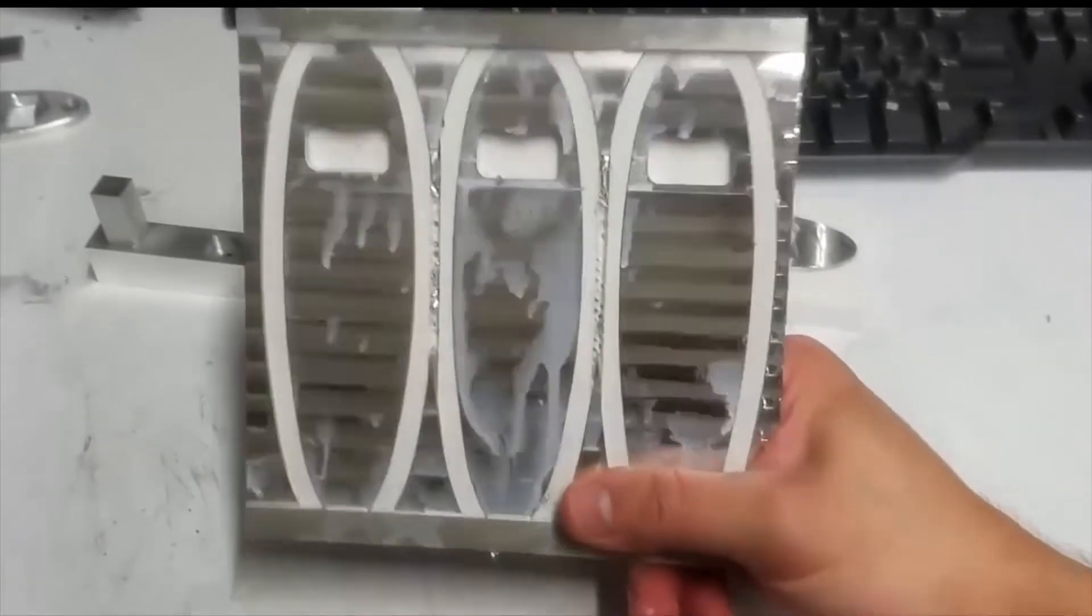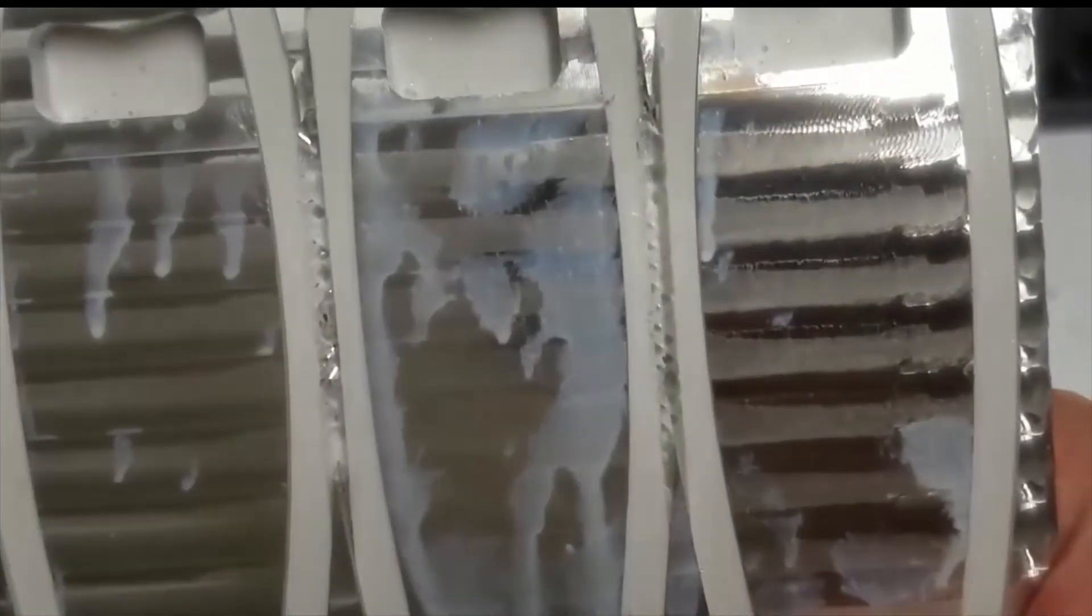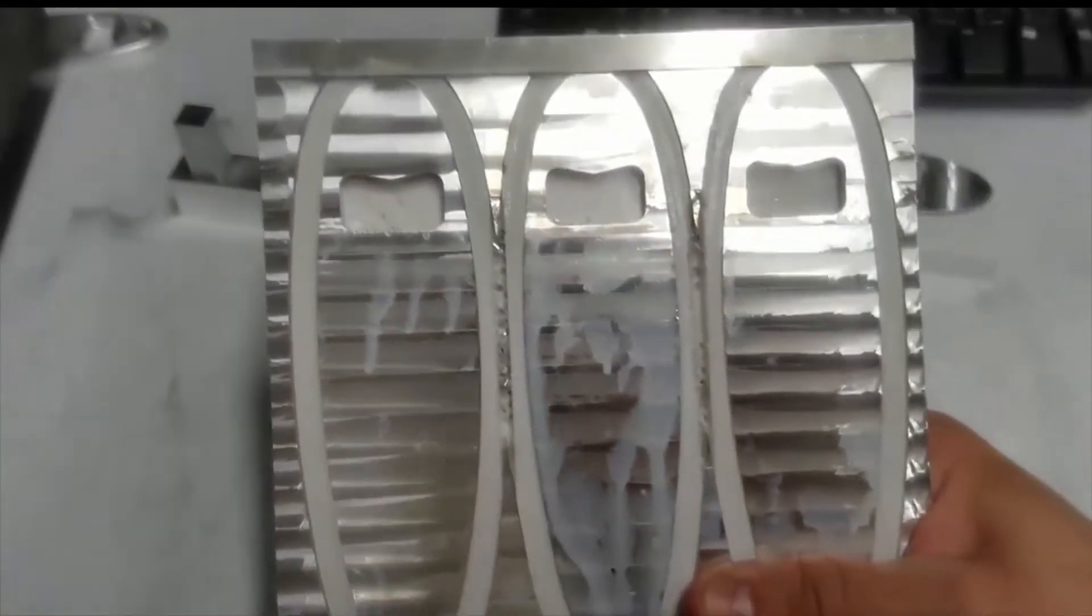And there you have it, we have our surfboards cut and you can see the white jig underneath holding everything in place. And now all I gotta do is take a Dremel to those little sections and my surfboards will be cut free.